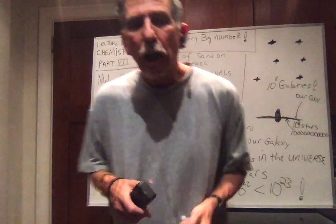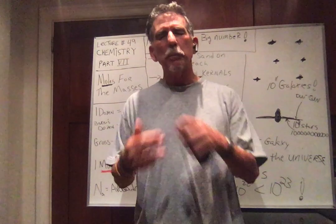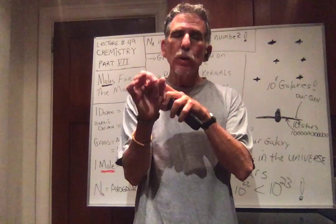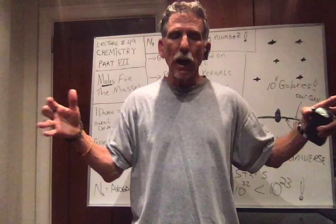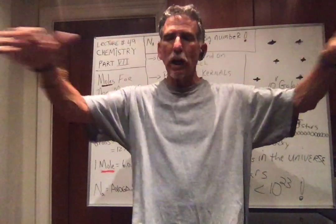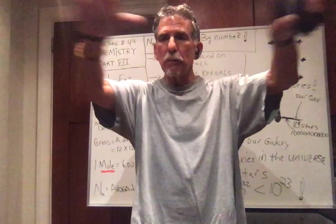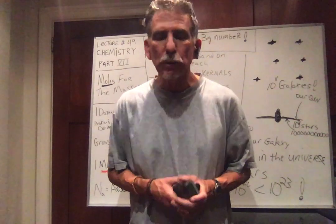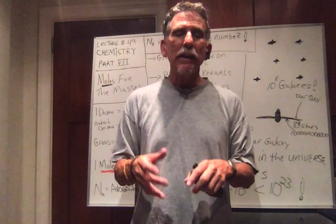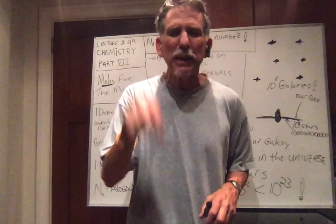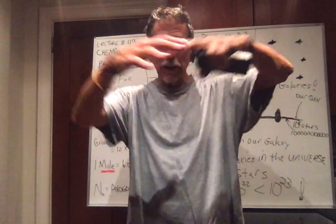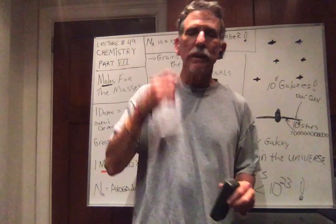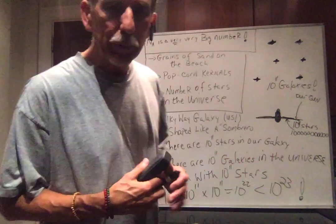Let's look at popcorn kernels. Suppose you buy the little kernels in a jar and you're going to pop them. If you took those little kernels and covered the entire continental 48 states — the entire United States — with unpopped kernels of corn, that's a lot. And if you go nine miles deep, nine miles deep, and cover the entire United States, that is Avogadro's number. That is one mole of unpopped corn kernels.